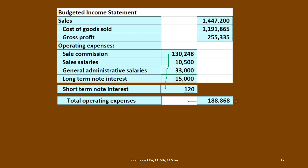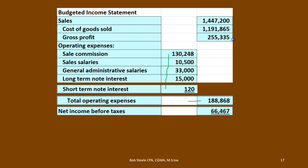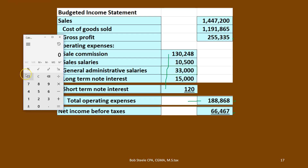Now we have gross profit and total operating expenses. We subtract those two just as we normally would — 255,335 minus 188,868 gives us 66,467, which is income before taxes. We're going to assume a 35% tax rate. We generally break out taxes separately as a line item, even though they are an expense, because taxes tend to distort the picture.